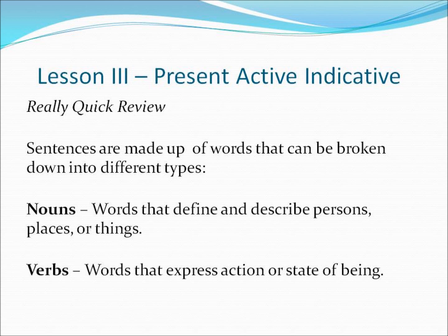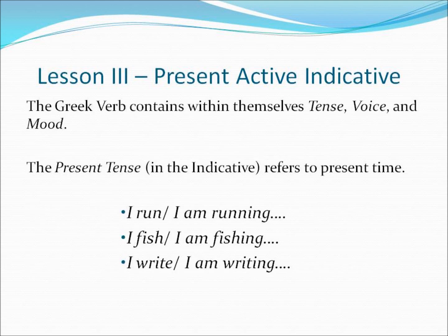More specifically, the present active indicative verb. The primary elements within the Greek verb contains a tense, voice, and mood. The present tense in the indicative format refers to present time: I run, or I am running; I fish, I am fishing; or I write, or I am writing. This is the present tense — it states that the verb's action is happening now.